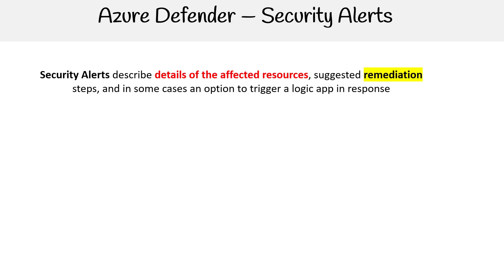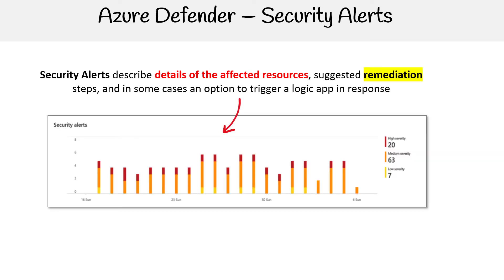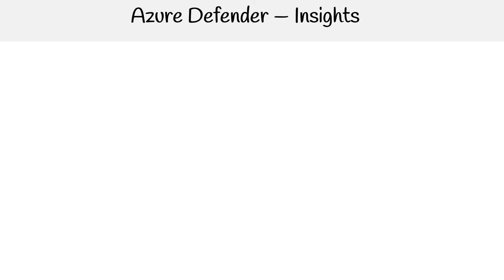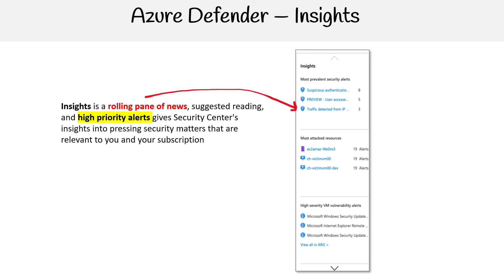For security alerts, they describe details of the affected resources such as remediation steps, and in some cases an option to trigger a logic app in response. You can see security alerts over time. Then there are insights — a rolling pane of news, suggested reading, and high priority alerts that give Security Center's insights into pressing security matters relevant to you and your subscription.